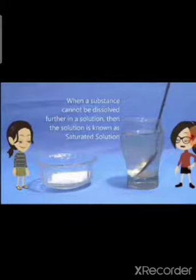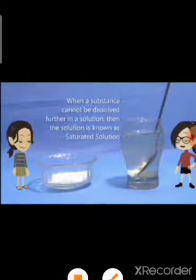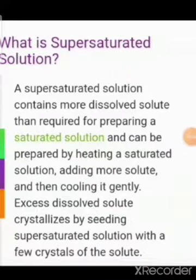A fixed quantity of water can dissolve only a fixed quantity of sugar. When a substance cannot be dissolved further, the solution is known as a saturated solution. If we warm a saturated solution, the distance between molecules increases with the rise in temperature, so more solute will dissolve. A supersaturated solution contains more dissolved solute than required for a saturated solution and can be prepared by heating a saturated solution, adding more solute, and then cooling it gently. Excess dissolved solute crystallizes by seeding the supersaturated solution with free crystals of solute.